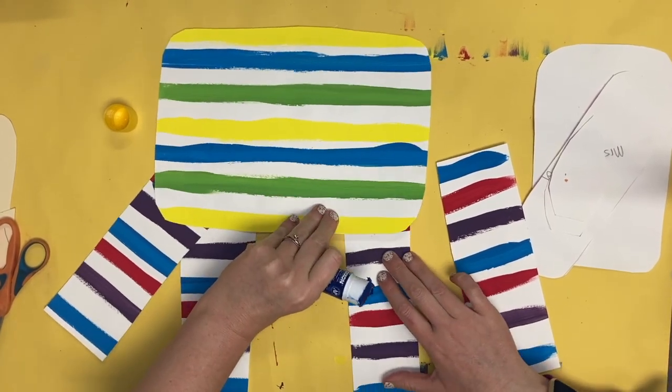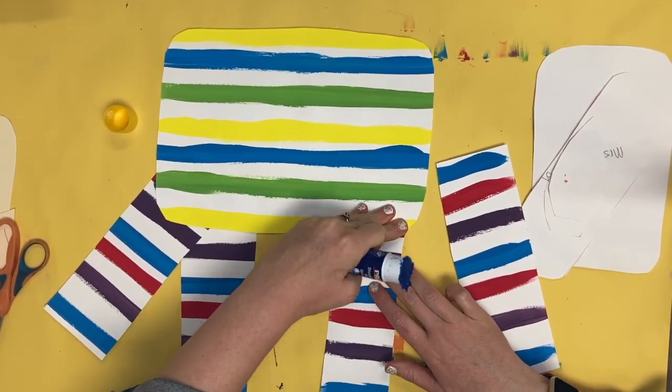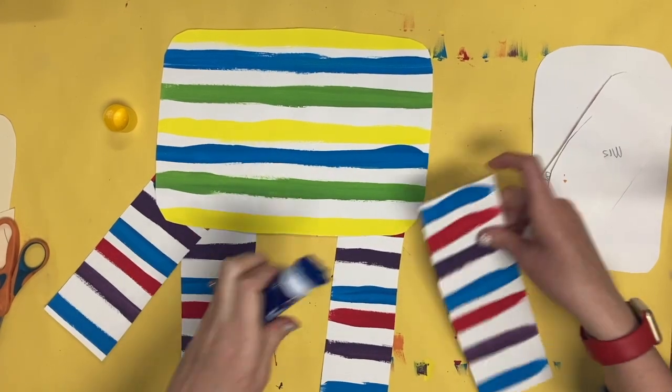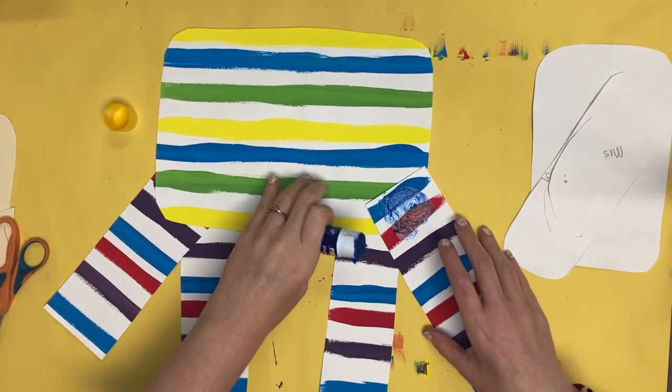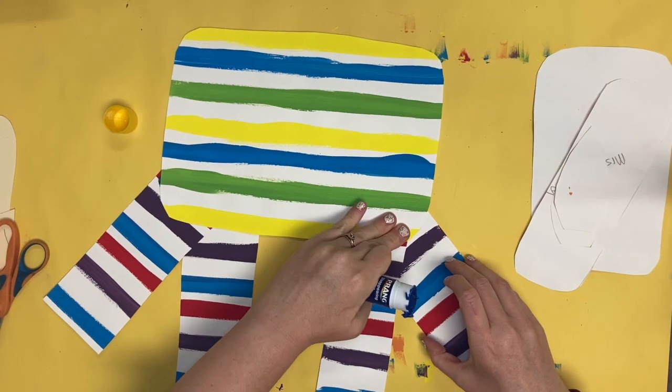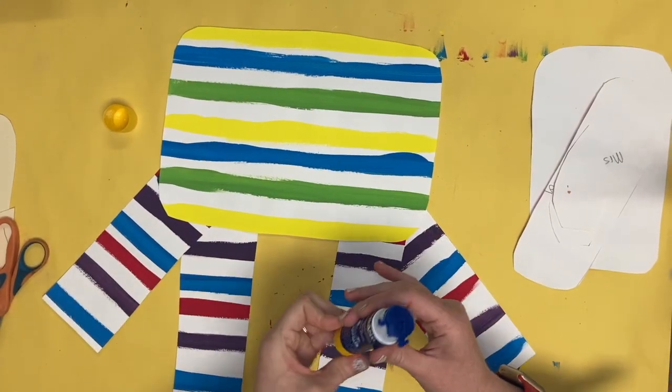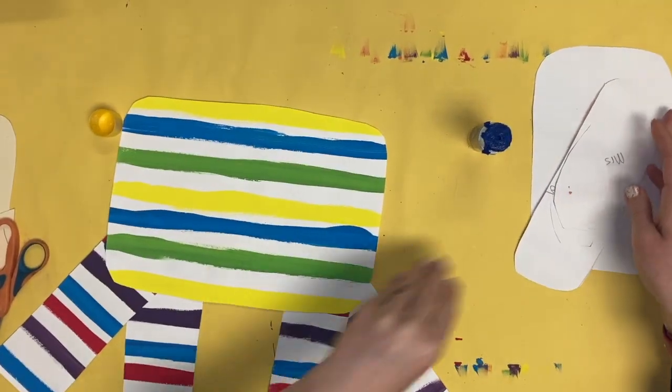Here is the next leg. This one's going to go in the front corner. Take your time. Make sure you get enough glue onto that piece of paper. Slide it under and press it down flat.